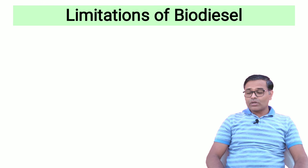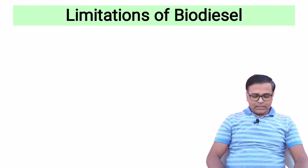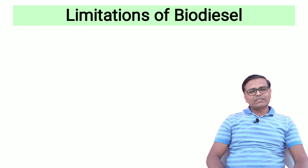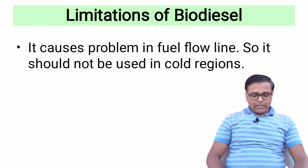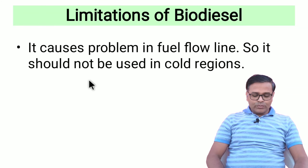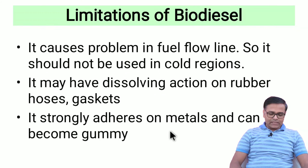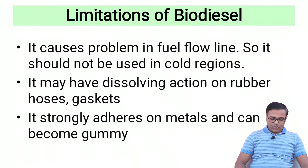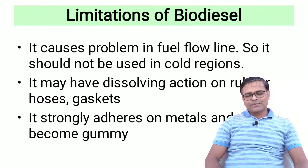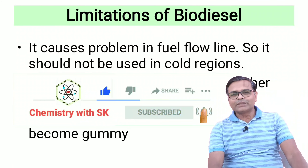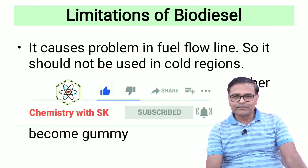Now we will see some limitations or disadvantages of biodiesel, and there are very few. It causes problems in the fuel flow line, so it should not be used in cold regions. It may have a dissolving action on rubber hoses and gaskets. Another problem is that it strongly adheres to metals and becomes gummy. These are the drawbacks of biodiesel. Keep subscribed to our channel for updates on the latest videos. Thank you.